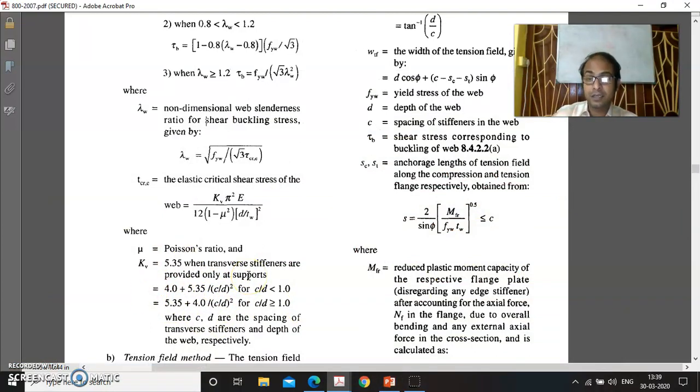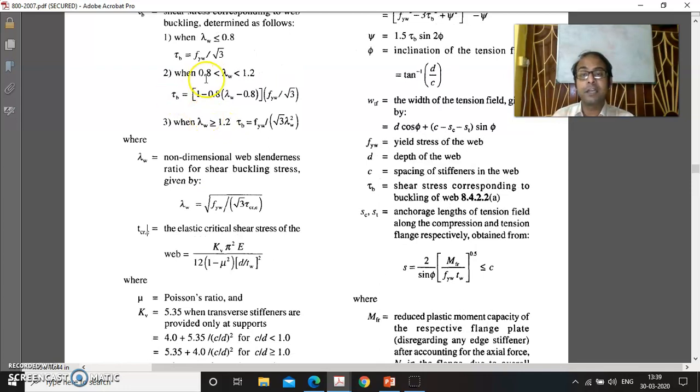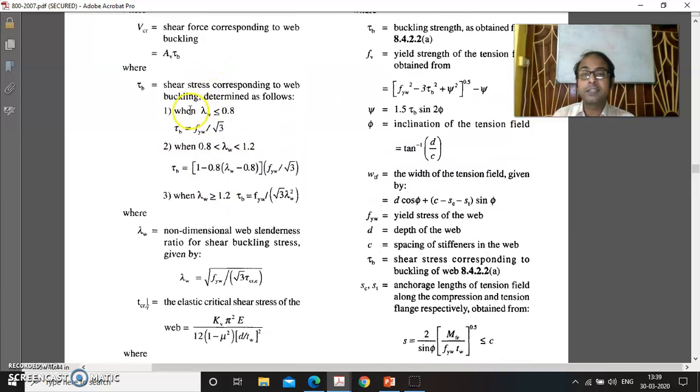We have to consider and calculate this shear buckling coefficient and the Poisson's ratio. With this, we have to calculate tau cr, the critical shear stress. With this help, we have to go for the non-dimensional slenderness ratio, and in turn we will calculate tau b. This tau b will give us the buckling stress shear stress corresponding to web buckling.